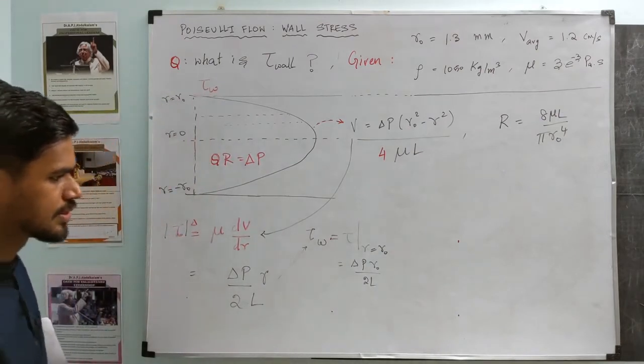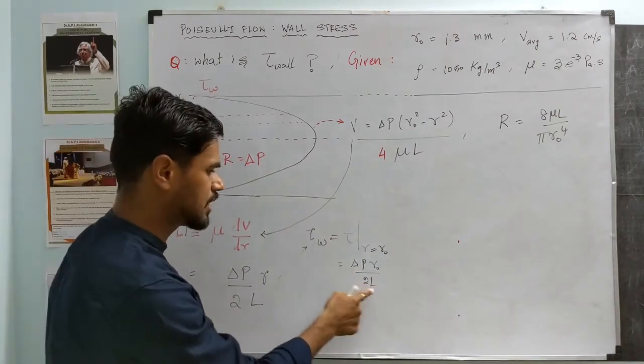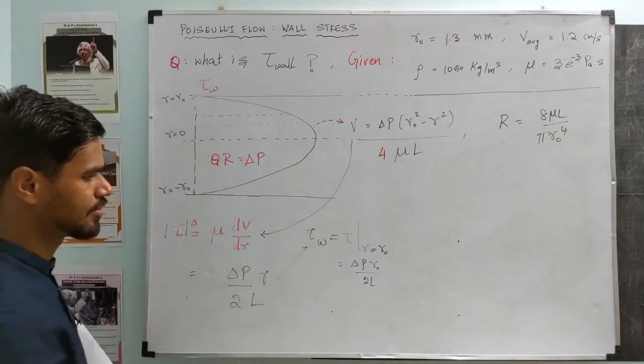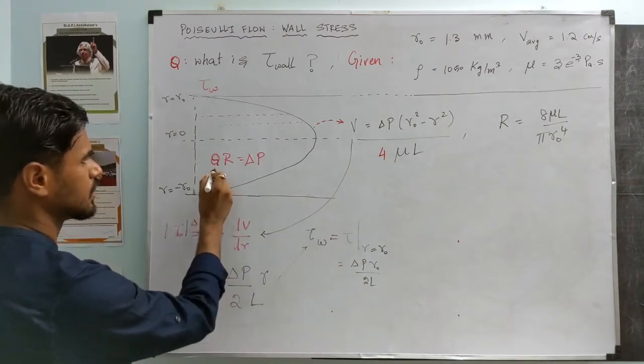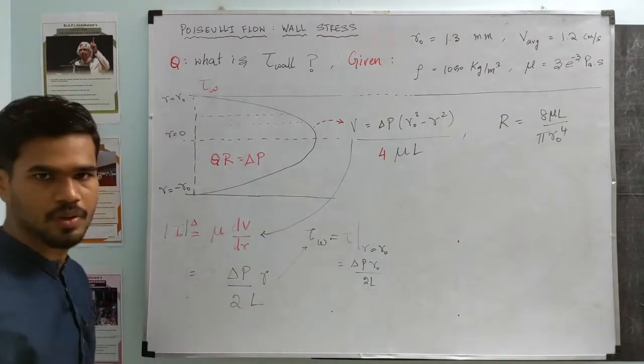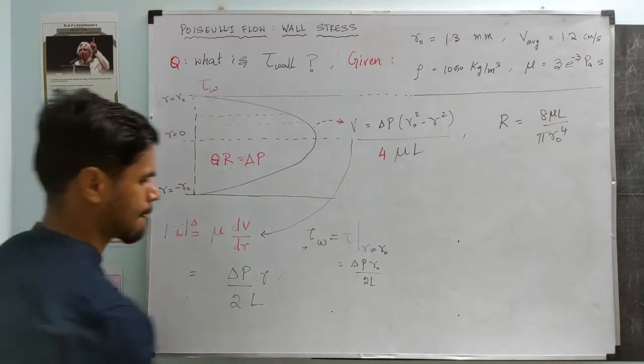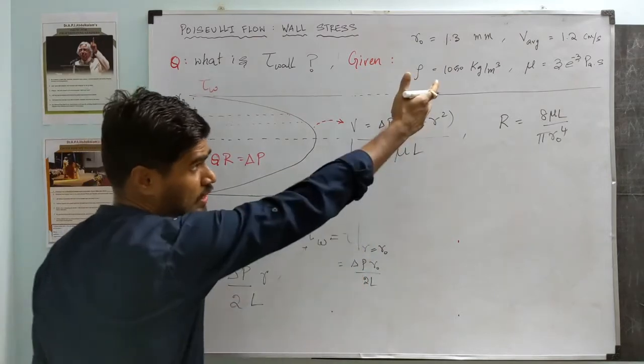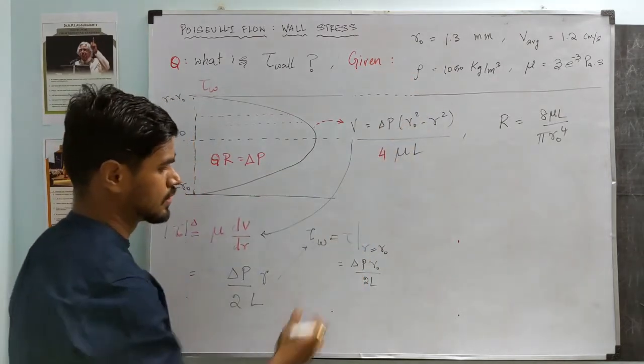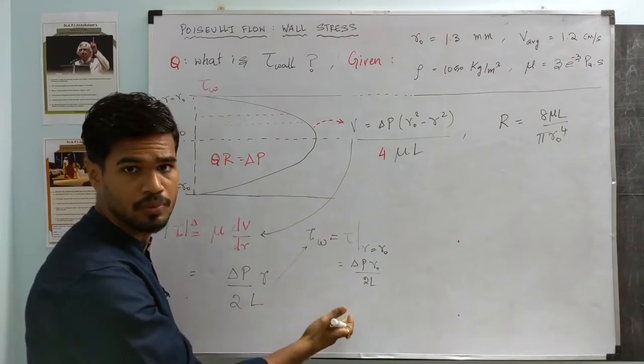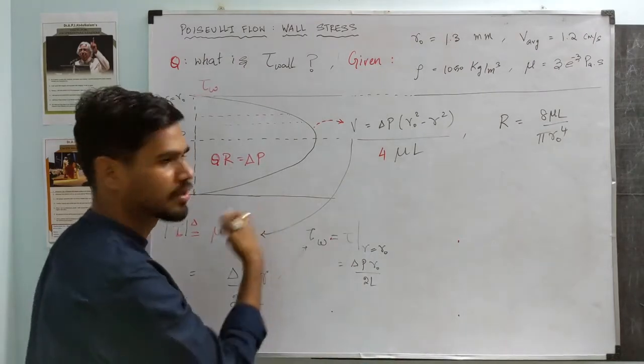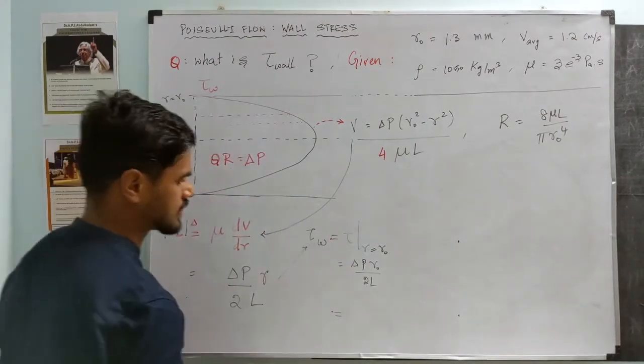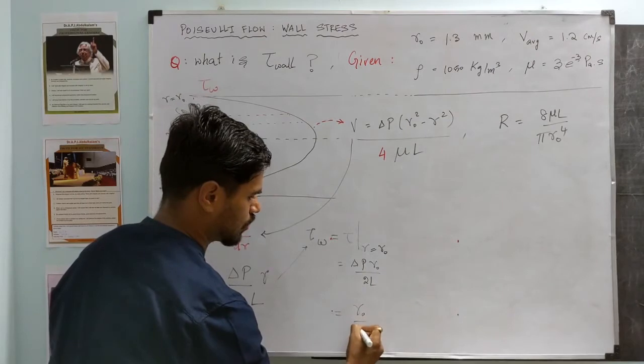So do we have enough information in the question to find the wall shear stress? We still don't have them, right? Because this expression is in the form of Δp and r. So let's go ahead and try to replace Δp with Q times R. The reason for that is this pressure information is not directly given in the equation. So if we somehow replace that with flow Q, that we know is related to the velocity, let's substitute for Δp which is Q times R.